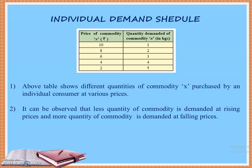If we look at this table, we can see the price of commodity X. When the price is 10, the consumer demands a certain quantity. As the price is reduced from 8 to 6 to 4, the quantity demanded by the consumer increases — from 2 to 3 to 4. And as the price is further reduced from 4 to 2, the quantity demanded keeps rising.